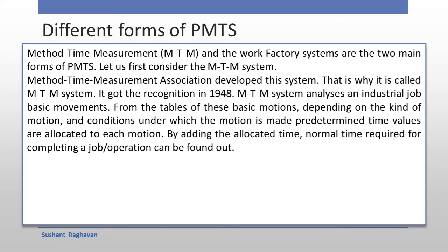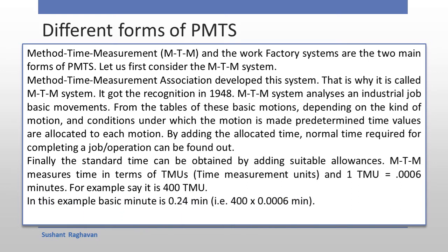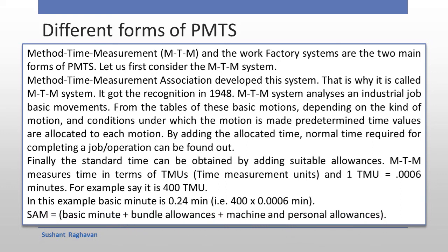The MTM system analyzes an industrial job's basic movements from tables of basic motion data, depending on the kind of motion and conditions under which the motion is made. Predetermined time values are allocated to each motion. By adding the allocated times, the normal time required for completing a job operation can be found. The standard time can be obtained by adding suitable allowances. MTM measures time in terms of TMUs — Time Measurement Units — where one TMU equals 0.0006 minutes. For example, 400 TMU equals a basic time of 0.24 minutes (400 × 0.0006). The SAM equals basic minutes plus bundle allowances plus machine and personal allowances.